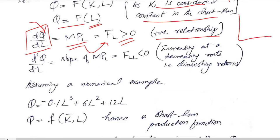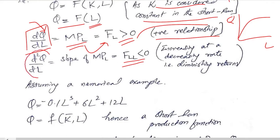In economic theory, the relationship between labor and output is generally positive. However, the second derivative — the rate of change of the derivative of the production function with respect to labor — is negative. This means output is increasing at a decreasing rate, indicating diminishing returns, which is supported by economic theory.